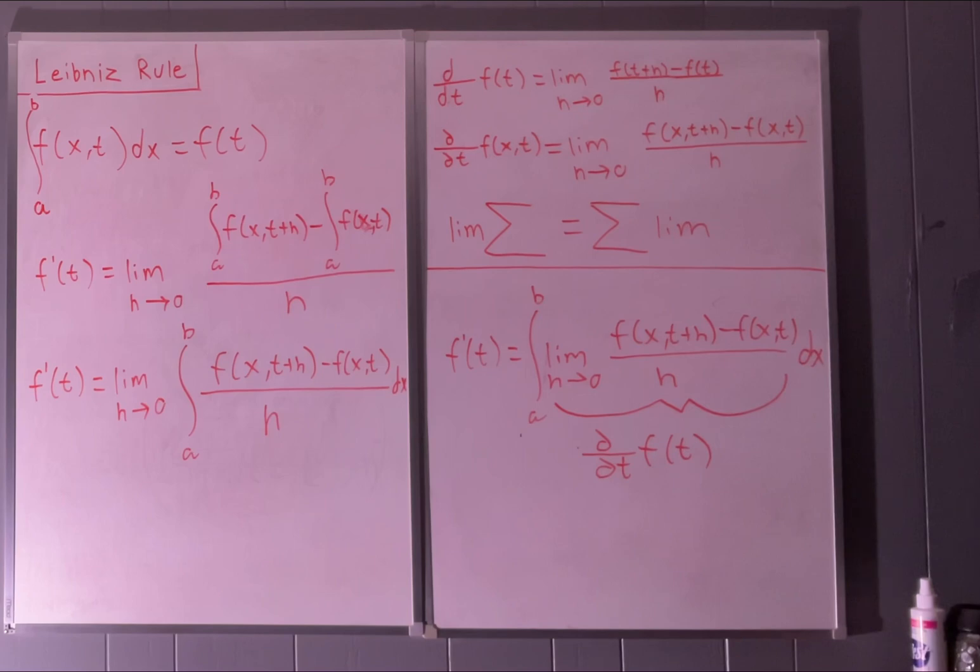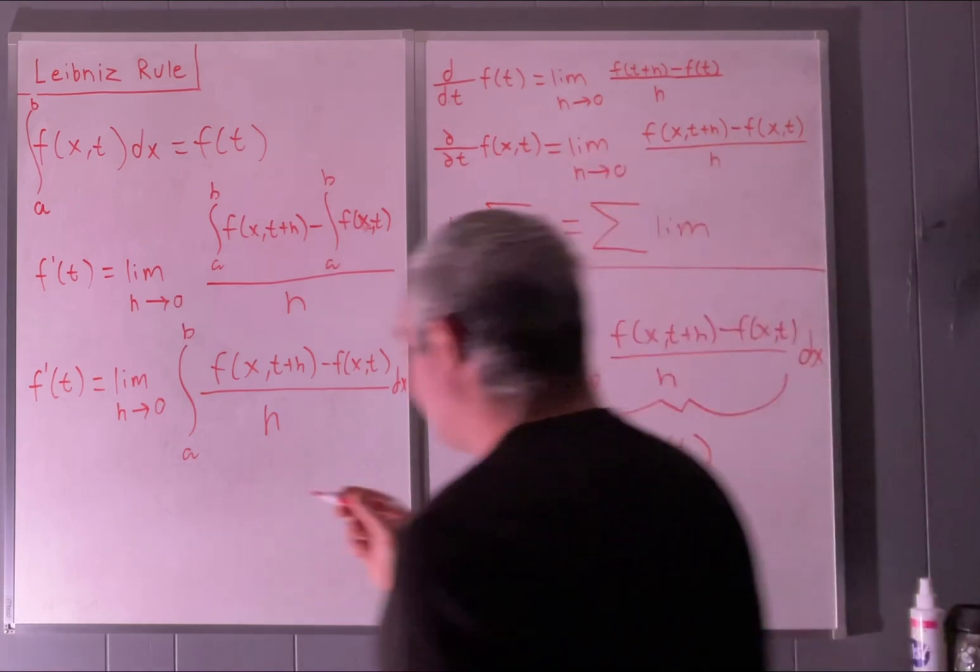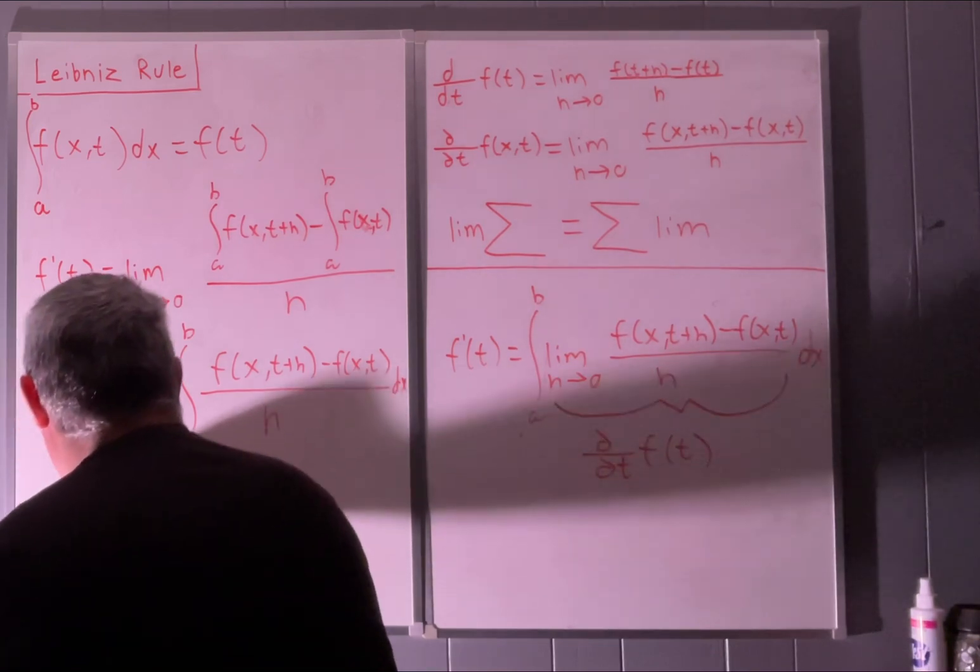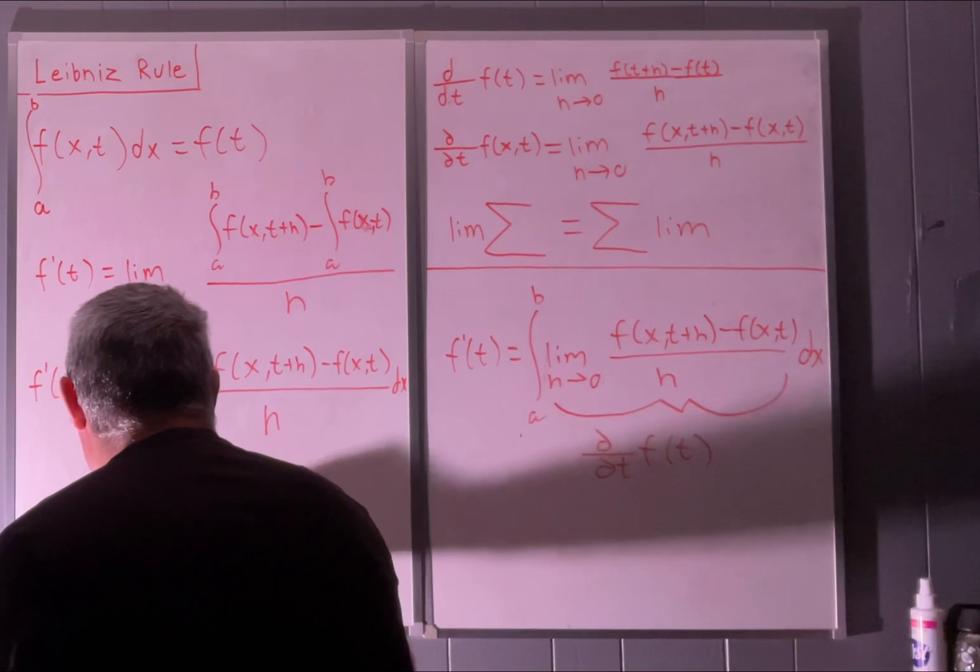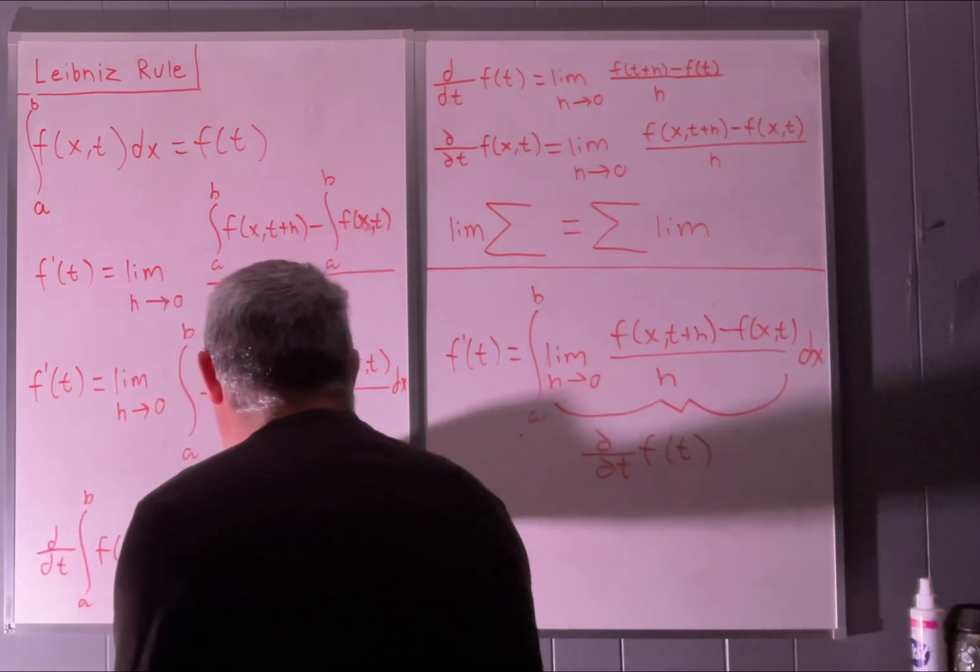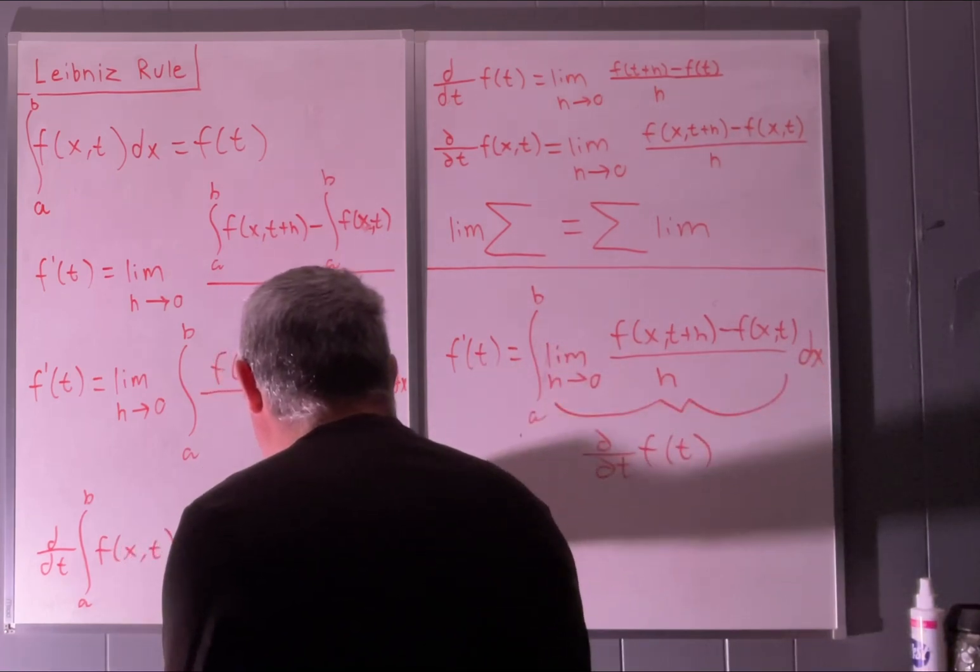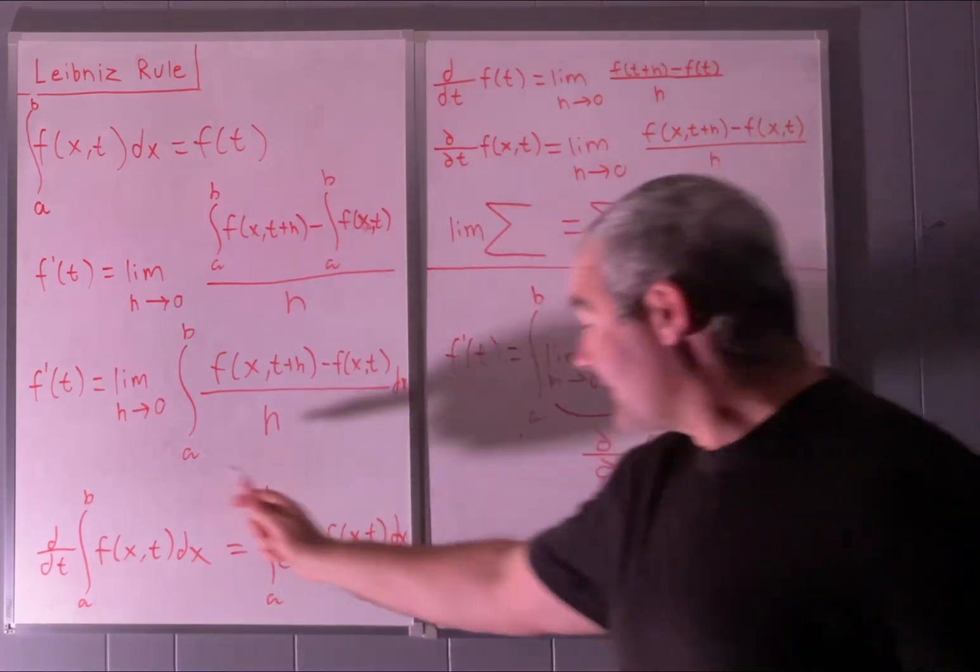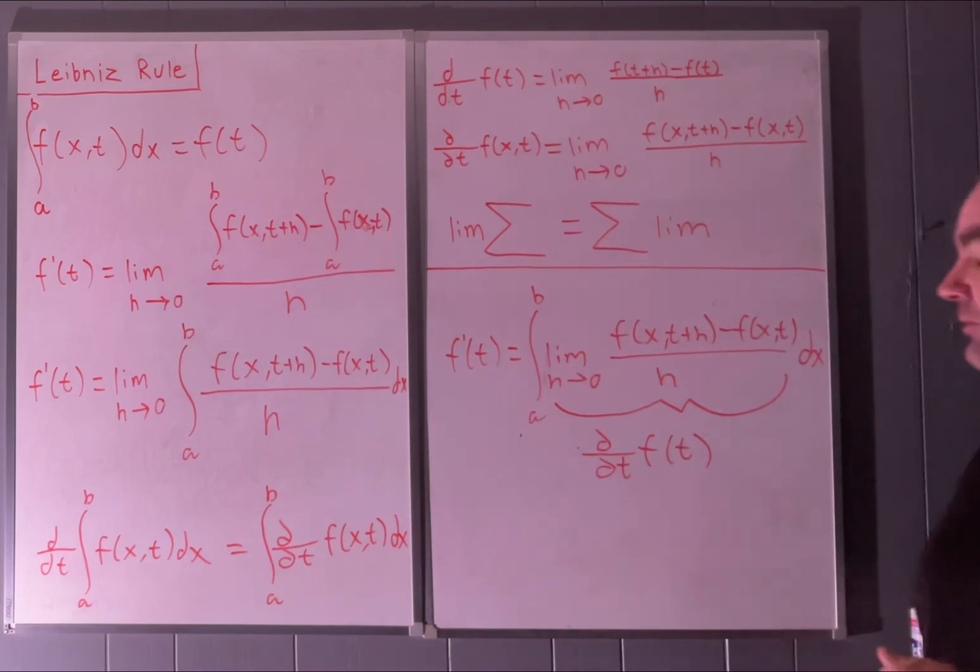That is the Leibniz rule for differentiation under the integral sign. And we'll just go ahead and write out what we've shown right here. Basically, we've said that if we take the derivative with respect to t, not the partial, of an integral from a to b of f of x and t dx, that is equal to the integral from a to b of the partial with respect to t of f of x and t dx. And that's it. That's the Leibniz rule right there. That's what it says. That's what we've just shown. So anyway, that's my review of the Leibniz rule. Hope you enjoyed that.